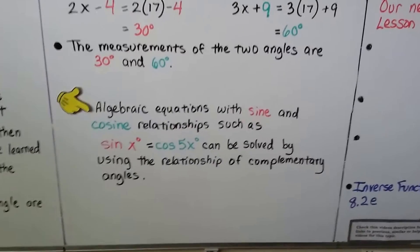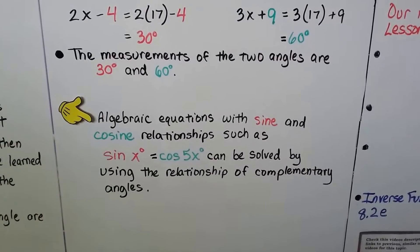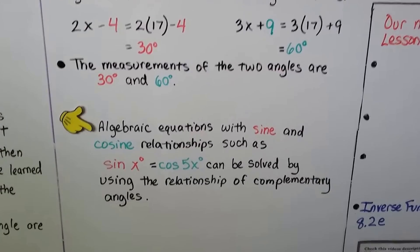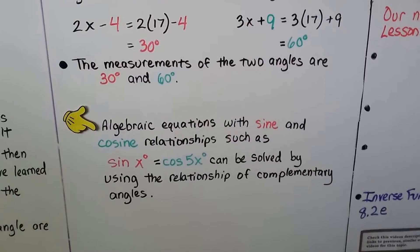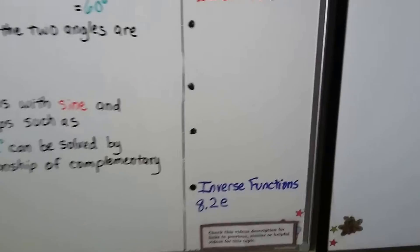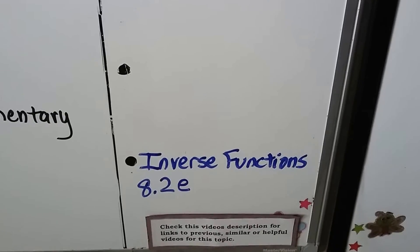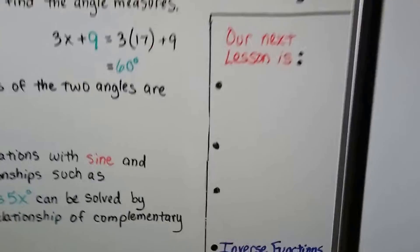And algebraic equations with sine and cosine relationships such as sine x degrees equals cosine 5x degrees can be solved by using the relationship of complementary angles. Our last video for lesson 8.2, 8.2e, is going to be about inverse functions before we move on to 8.3.